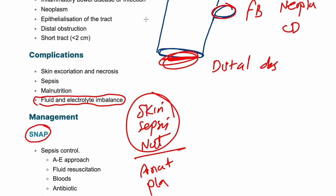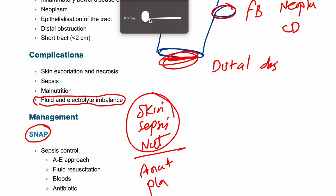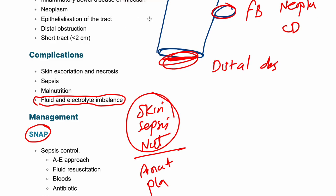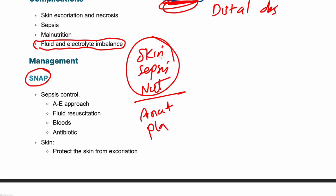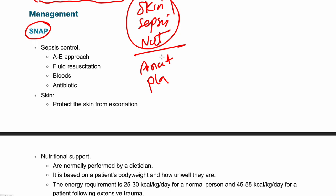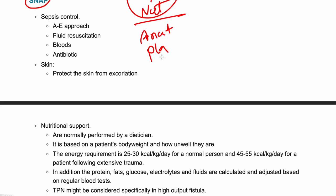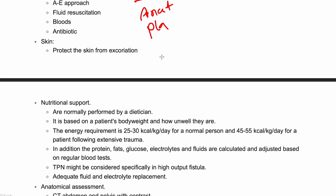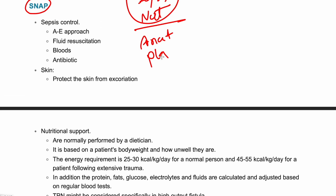In addition to those complications, there is also fluid and electrolyte imbalance. For treatment, following the SNAP protocol: first, control sepsis; second, address nutrition; then perform anatomical assessment of the enterocutaneous fistula; and finally, plan your treatment.